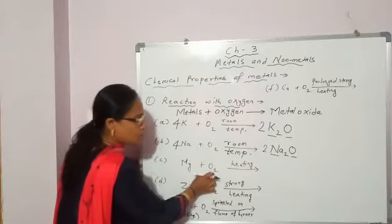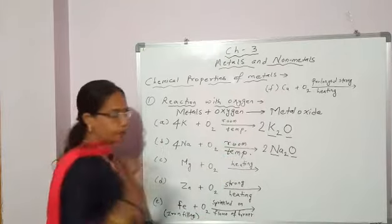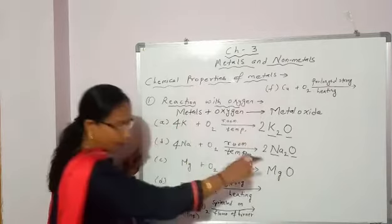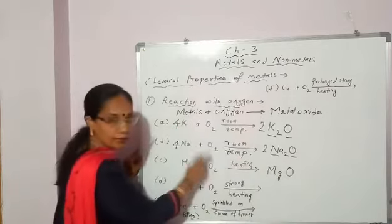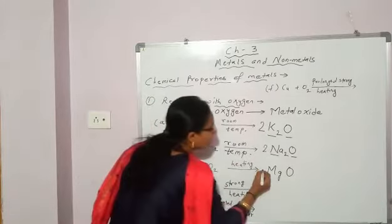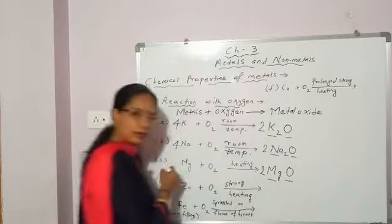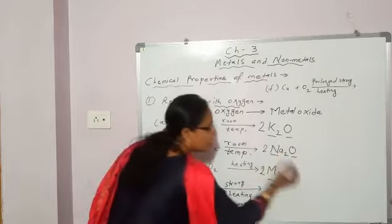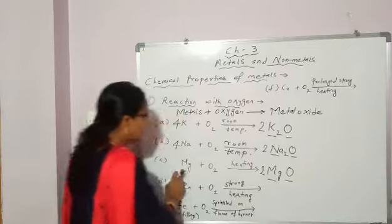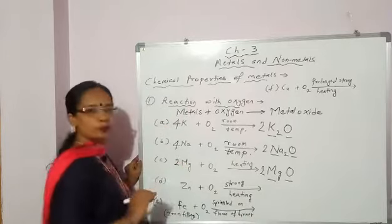Magnesium reacts with oxygen on heating — at room temperature it will not react — and what is formed? Magnesium oxide. Balance it: how many oxygen atoms? 2 on one side, 1 on the other. Add 2 in front of the formula. This 2 is for magnesium as well as oxygen, so oxygen becomes 2. For magnesium: 2 on one side, 1 on the other — add 2 in front.